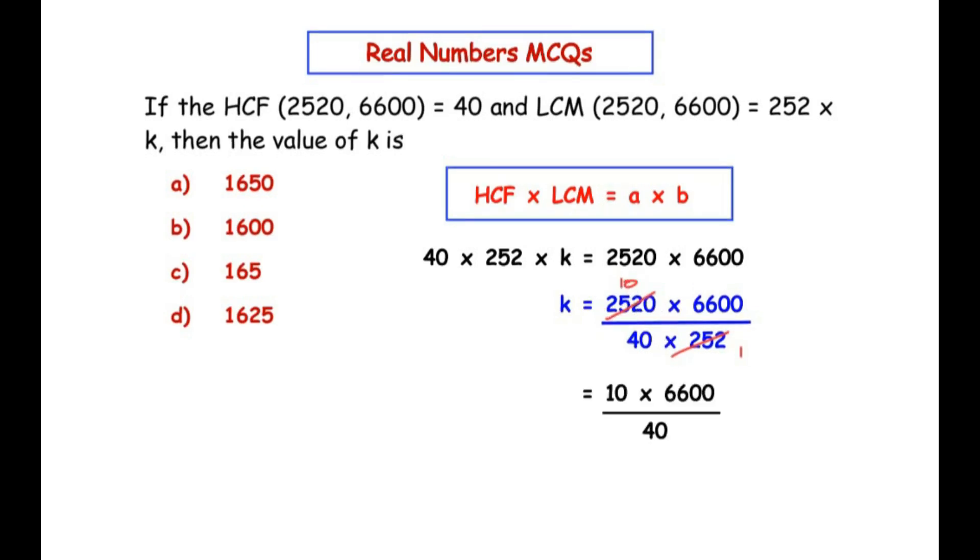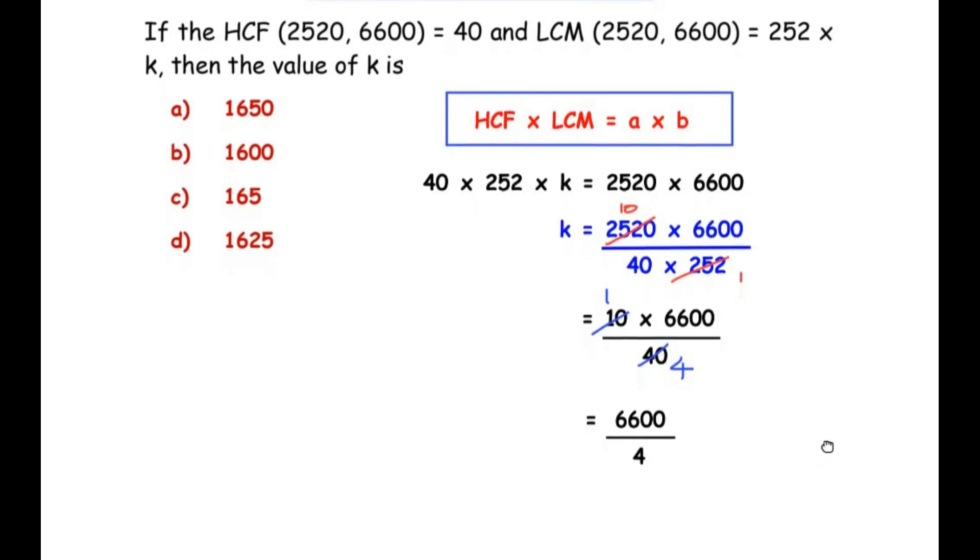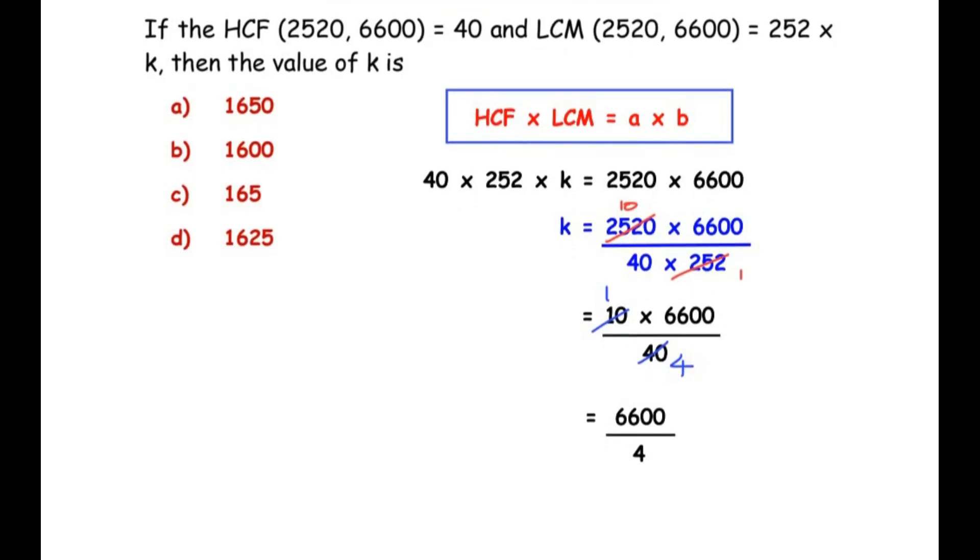Now 10 can divide 40: 10 × 4 = 40. So we're left with 6600 in the numerator and 4 in the denominator. Now 4 divides 6600.